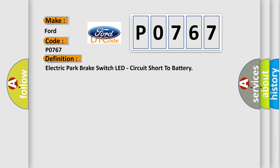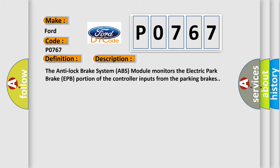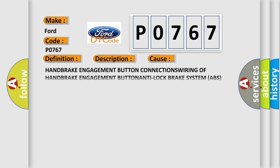And now this is a short description of this DTC code. The Anti-Lock Brake System ABS Module monitors the Electric Park Brake EPB portion of the controller inputs from the parking brakes. This diagnostic error occurs most often in these cases: Handbrake Engagement Button.